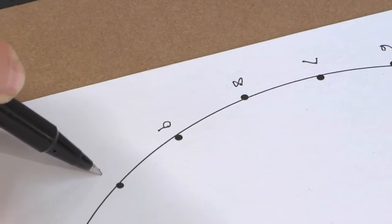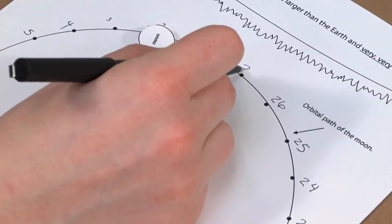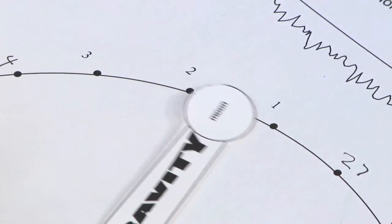For the simulation exercise, number the remaining days along the orbital path, 27 in total, rounded to the nearest day. Set the moon to day 1.